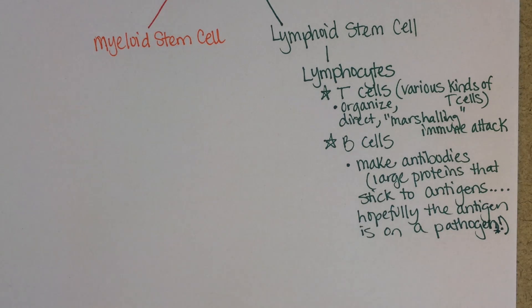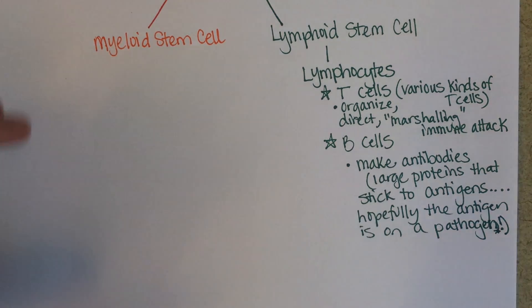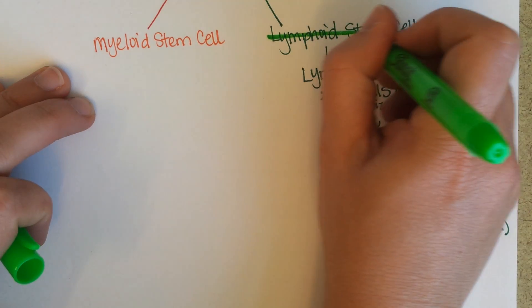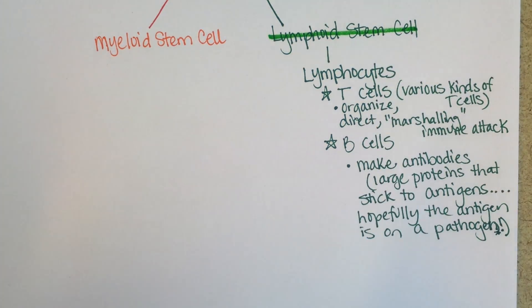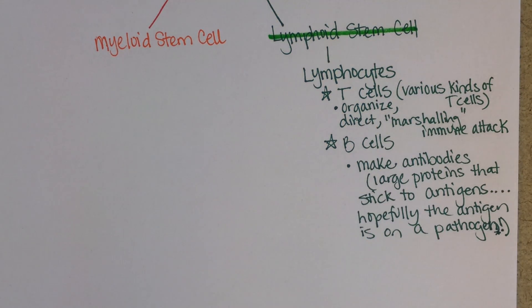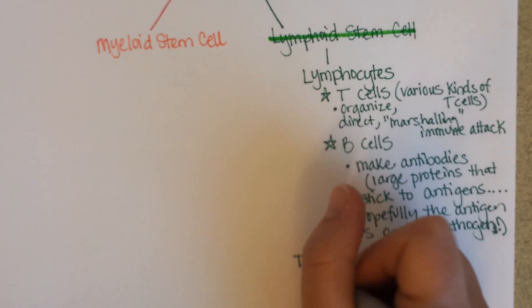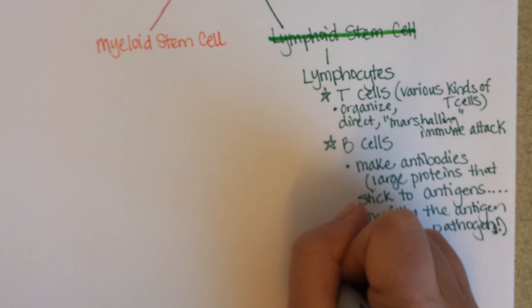The training for these kinds of cells — these lymphocytes — occurs in the lymph organs.